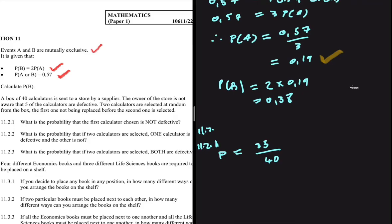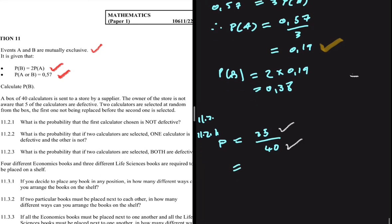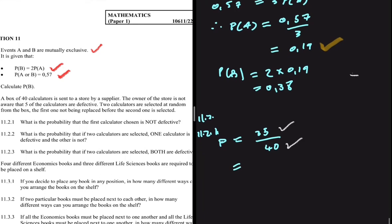The remaining 35 are not defective. So the probability of picking a calculator that is not defective equals the number of non-defective calculators divided by the total number of calculators, which equals 35/40 = 0.88. That is the answer to 11.2.1.